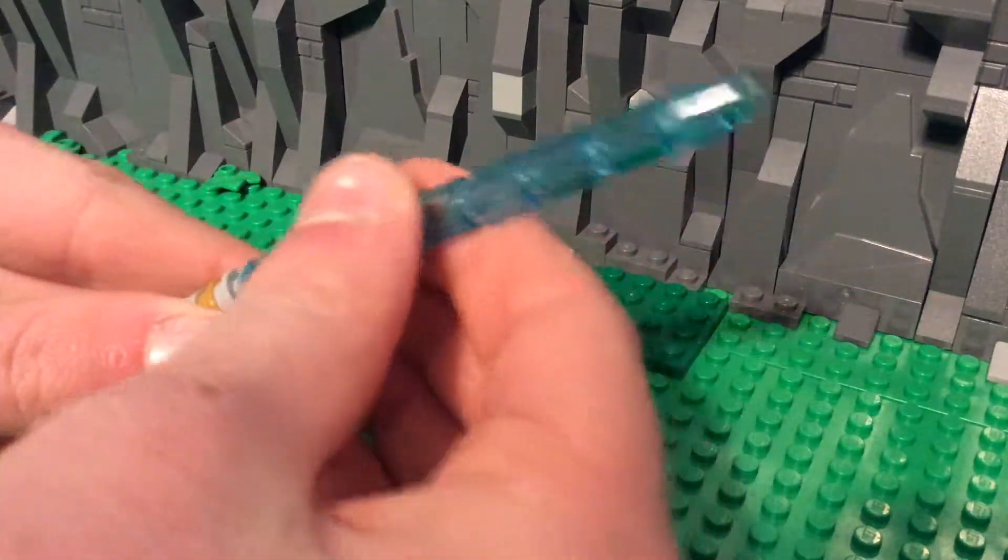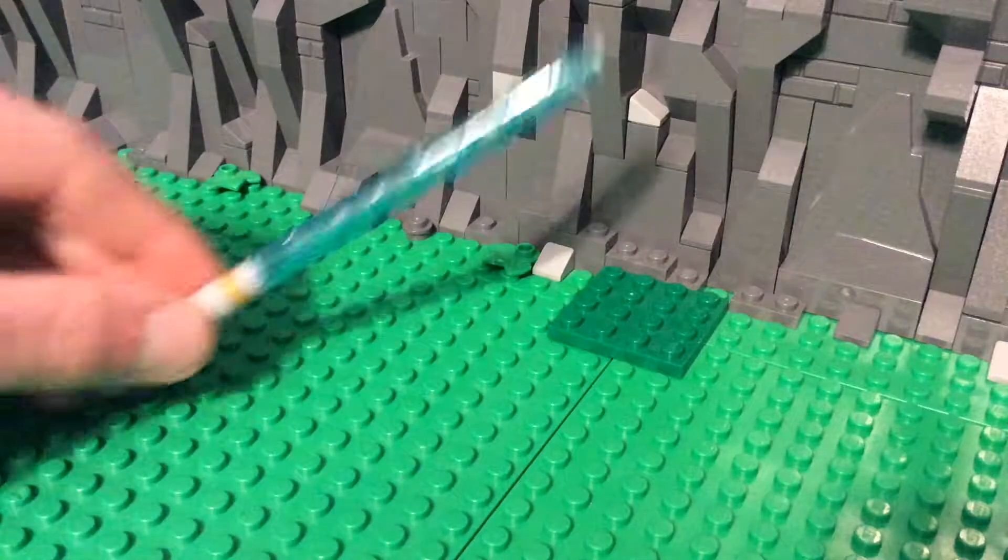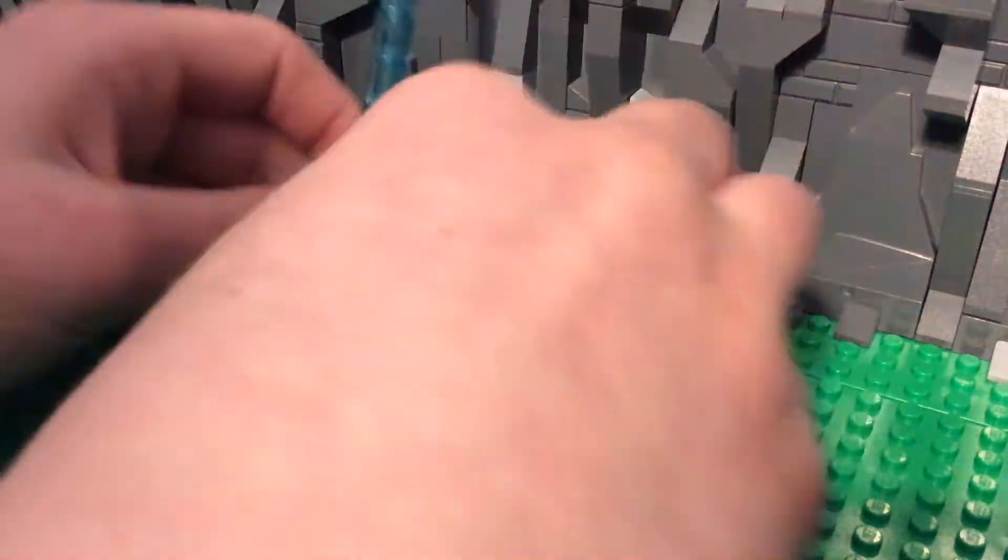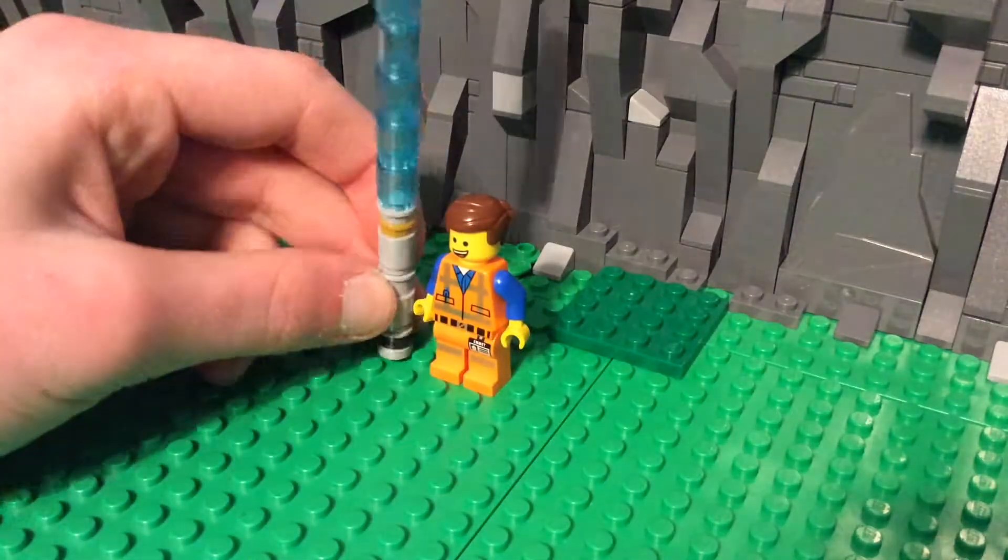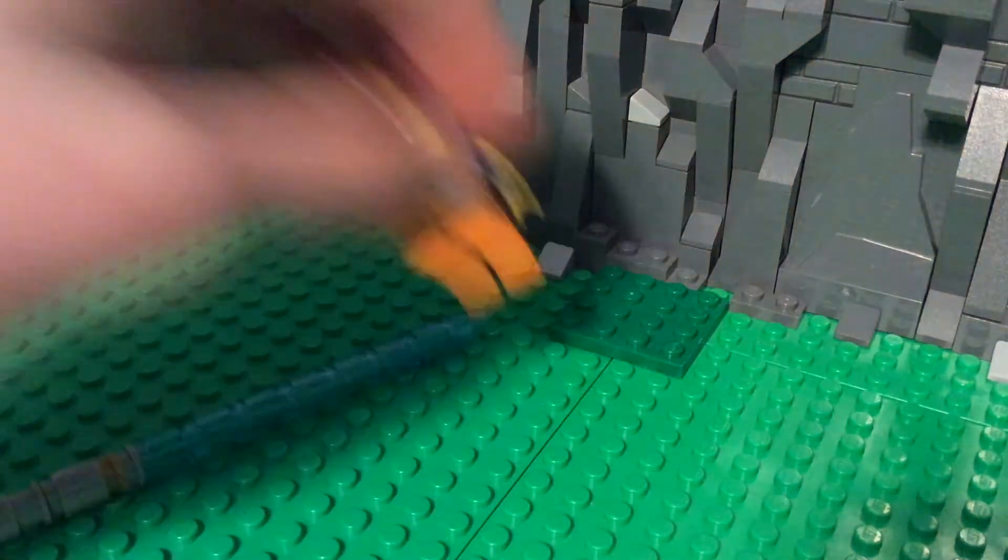And then we put this on and this is Obi-Wan's lightsaber. You could see this against a minifigure. It's fairly large, about three minifigs high and I do have another lightsaber.